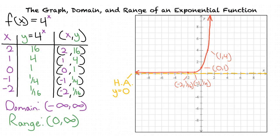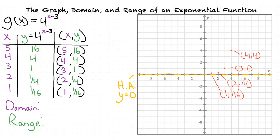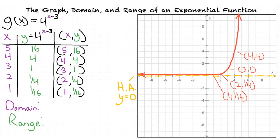We can now transform our graph. Based on our original function, this will be a horizontal transformation, since our graph moves 3 units to the right. Our x values also change as they move 3 units to the right, while the horizontal asymptote stays the same. Both the domain and range stay the same, because the graph still continues in both directions of the x-axis and the y values still get closer to 0 but do not reach 0. Our domain is negative infinity to infinity and our range is 0 to infinity, not including 0.